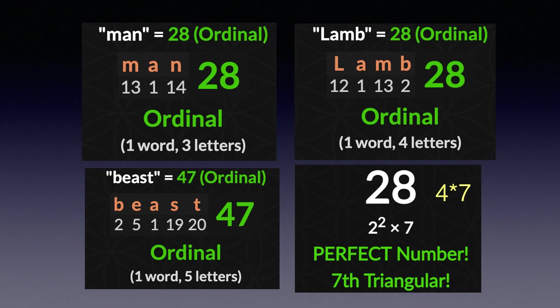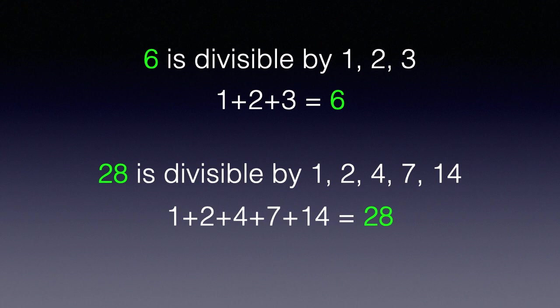Let's look at the second perfect number: 28. In a previous video I pointed out that the word 'lamb' has a value of 28, and the word 'man' also has a value of 28. 28 is both a perfect number and a triangular number — every even perfect number is triangular. I factored 28 as 4 times 7 to emphasize this 4×7 pattern, and of course 'beast' has a value of 47. The basic definition of a perfect number is one whose divisors sum to the number itself: 6 is divisible by 1, 2, and 3, and 1+2+3=6; 28 is divisible by 1, 2, 4, 7, and 14, and those sum to 28.